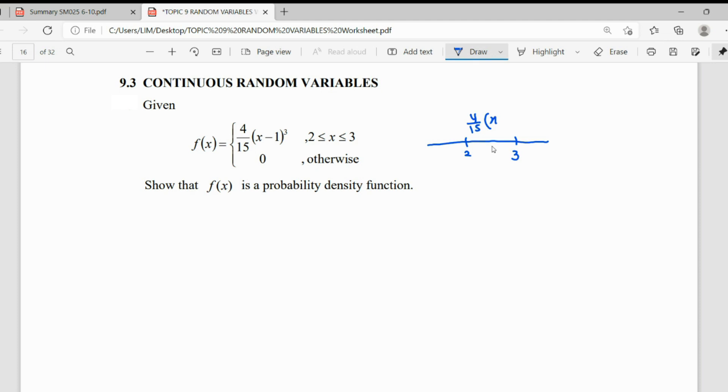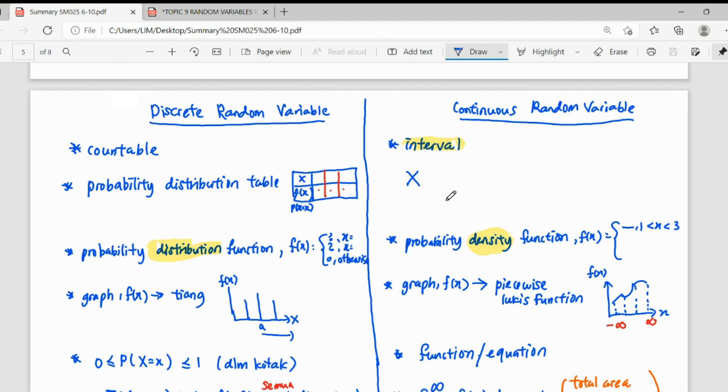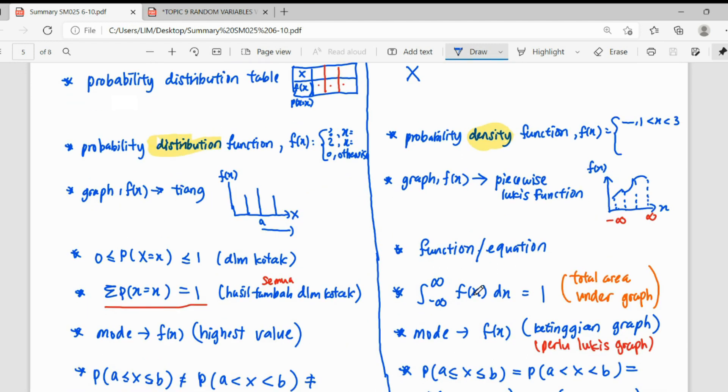For this question, it's quite simple - just from 2 to 3 with the function 4 over 15 times (x minus 1) cubed. In order to show that it is a probability density function, the characteristic we must hold is that the total area under the graph must equal 1. When we say area under the graph, we will come to integration.